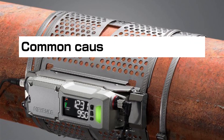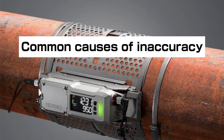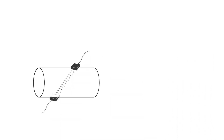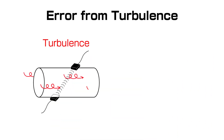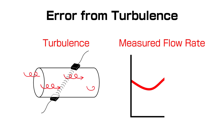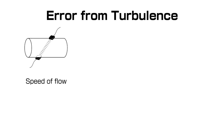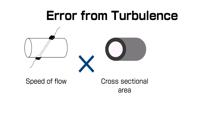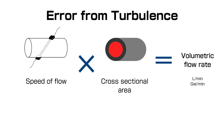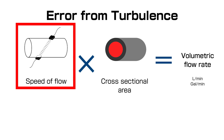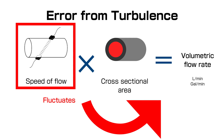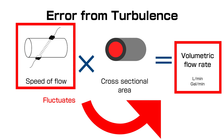First, we'll discuss some common reasons why you would see inaccuracies in a clamp-on ultrasonic flow meter. If the flow inside the pipe is very turbulent, the flow rate reading will typically begin to fluctuate. This is because ultrasonic flow meters detect the speed at which liquid travels through the pipe and multiply this speed by the internal cross-sectional area of that pipe — this is how they arrive at a volumetric flow rate. If the meter detects that fluid speed is fluctuating due to turbulence, the flow rate reading will fluctuate as a result.